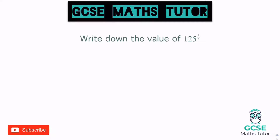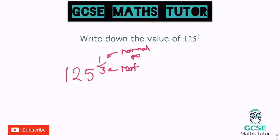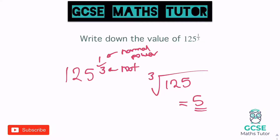Write down the value of 125 to the power of a third. The three on the bottom represents a cube root, and the one on the top is a normal power of one which doesn't change the number. So we need the cube root of 125. It helps to know your cube numbers — 125 is a cube number and the cube root of 125 is five, because five times five is 25, times five again is 125. The number on the bottom could be a square root, cube root, fourth root, fifth root, and so on.